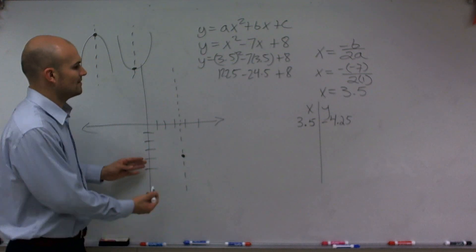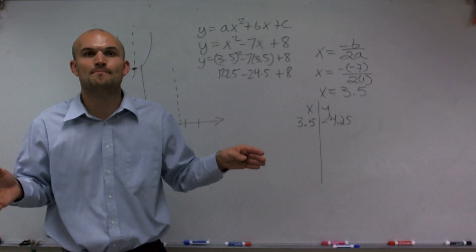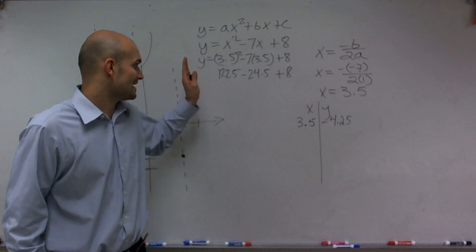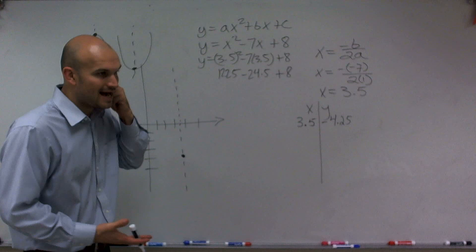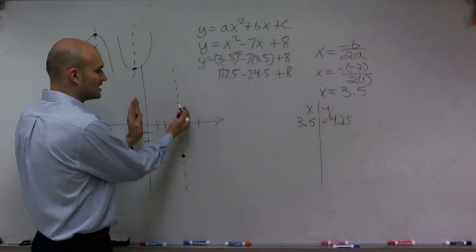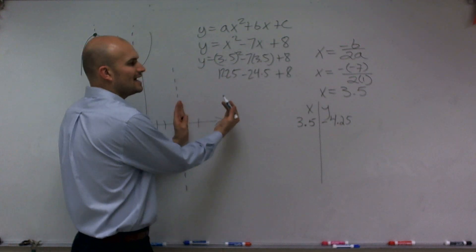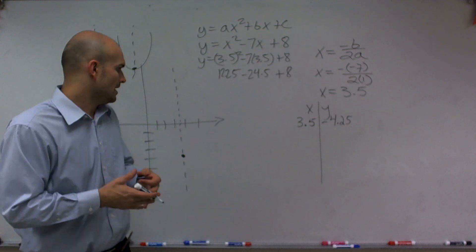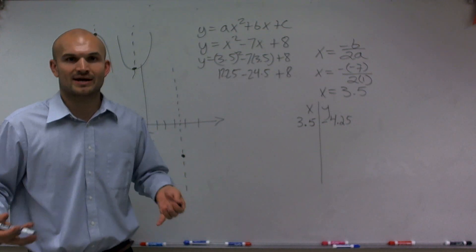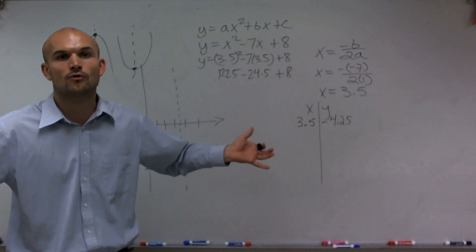So the next thing now is, remember I told you that our graph is symmetrical about our axis of symmetry. So what I need to do, rather than just picking negative and positive numbers, I want to pick numbers that are to the left of your axis of symmetry and to your right of the axis of symmetry. And for this example, I'm just going to choose one value to the left and to the right, just to make sure this video is not way too long.